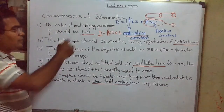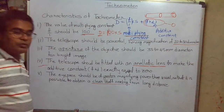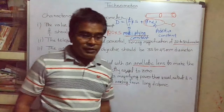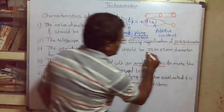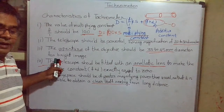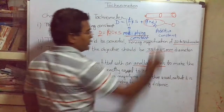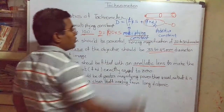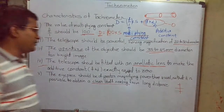To summarize, the five characteristics of a tachometer are: one, the multiplying constant f/i should be 100; two, the magnifying power of the telescope should be in the range of 20 to 30 diameters; three, the aperture of the objective should be in the range of 35 to 45 mm diameter; four, an analytic lens should be introduced between the eyepiece and object glass to make the additive constant f + d zero; and five, the eyepiece should be of greater magnifying power so that we can clearly see the staff reading and crosshairs.